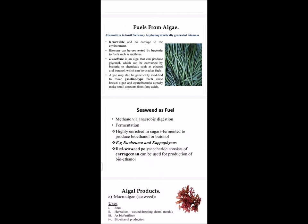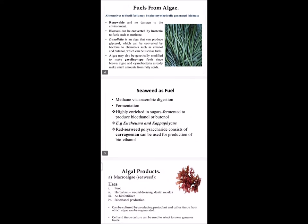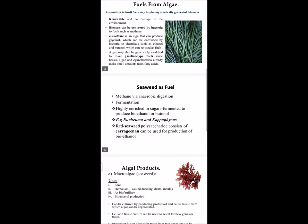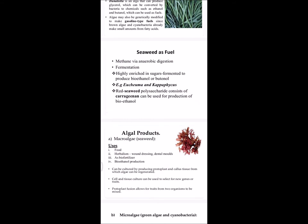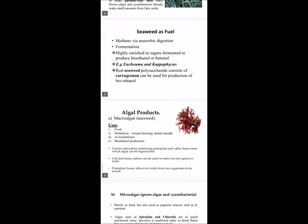One alga known as Dunaliella can produce glycerol, and by applying chemicals to glycerol we can produce ethanol and butanol, which can also be used as fuels. Seaweed can also be used as a fuel — we can produce methane from red seaweed by anaerobic digestion or fermentation. Red seaweed contains carrageenan and can be used for bioethanol production.